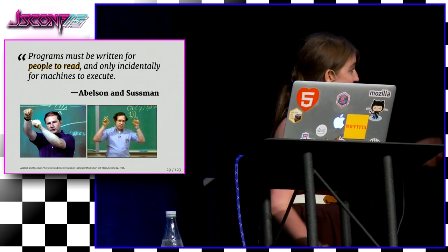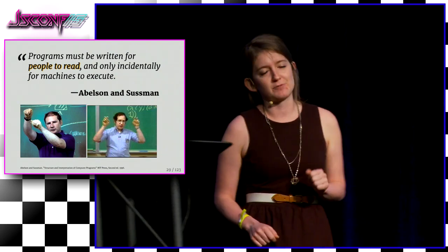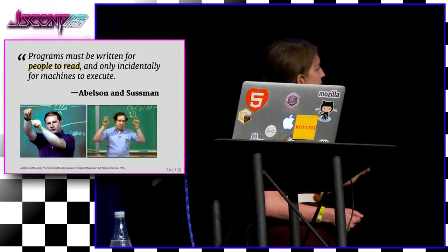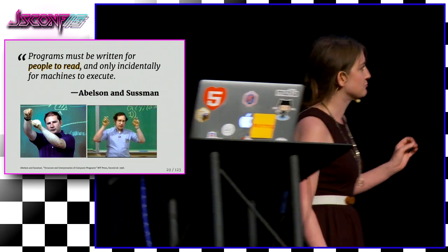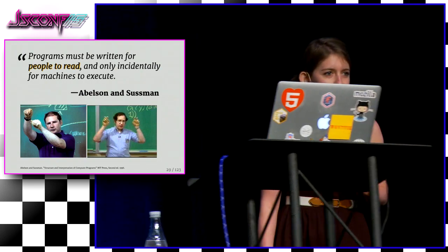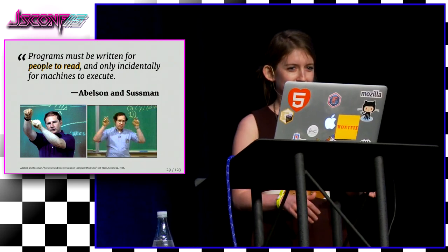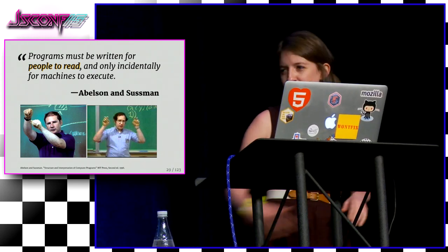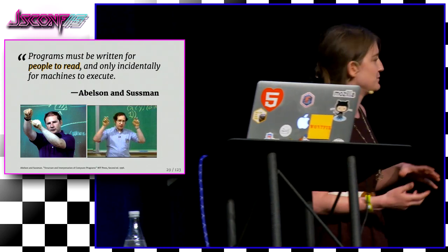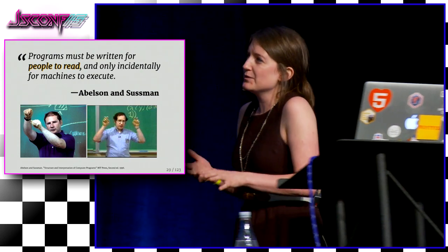You might recognize Abelson and Sussman — they wrote a book we're going to talk about a little later. What they say in that book is: programs must be written for people to read, and only incidentally for machines to execute. This is a really big point. People write programs. People read programs. The computers do stuff over there. We're really here to program for people.